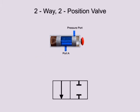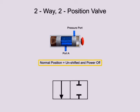Next, lines are drawn to indicate the normal position of the valve. The normal position is defined as the position of the valve when its spool is unshifted and the power is off. This means that any mechanical actuators, such as springs, are in their non-actuated positions. Electrical actuators, such as solenoids, are powered off. The normal position can sometimes be referred to as the unshifted, de-energized, or unactuated position.